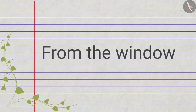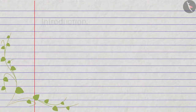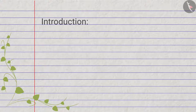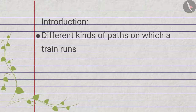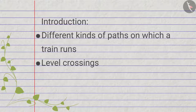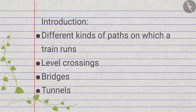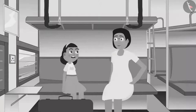Introduction: In this video we will learn about the different kinds of paths on which a train runs, and we will also learn about level crossings, bridges, and tunnels. Zia is on her way to her grandmother's house.